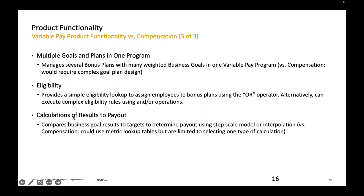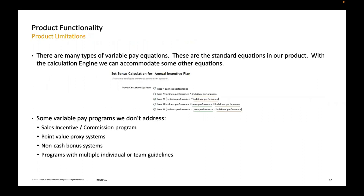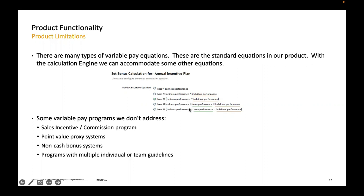This is important — also a certification question. There are many types of variable payout equations. There are standard equations in the product, and with the calculation engine we can accommodate others. For a customer where only business goals apply, we use the business-only equation. Where business and individual both apply, we use a combined equation. Where business and team apply, we use yet another equation.